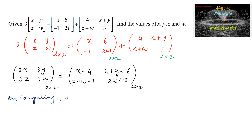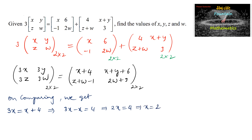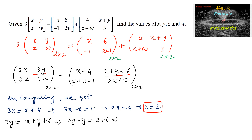Comparing corresponding elements: 3x = x+4, which gives 2x = 4, so x = 2. For y: 3y = x+y+6. Substituting x = 2, we get 3y - y = 2 + 6, so 2y = 8, giving y = 4.